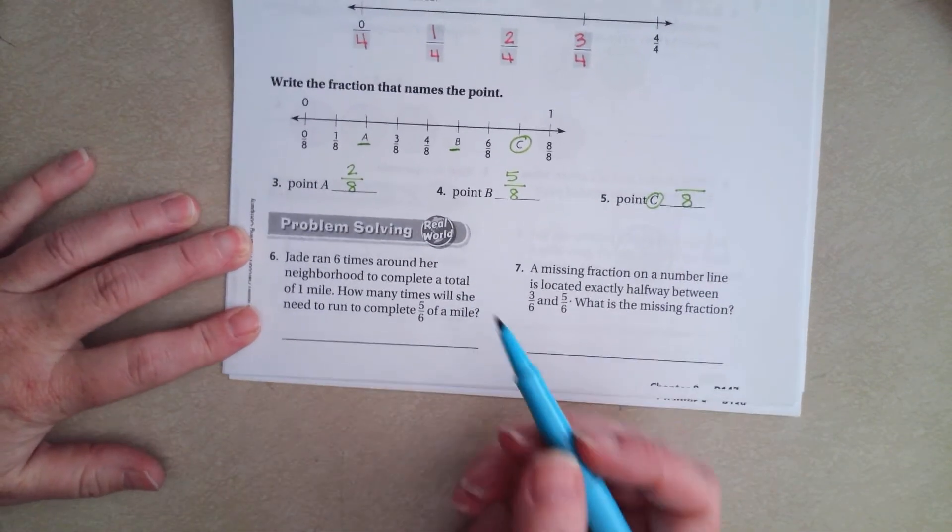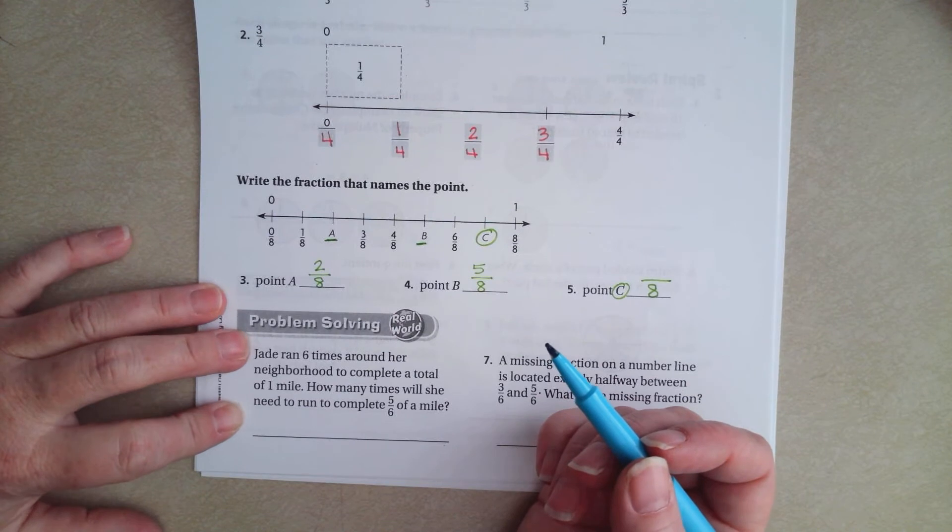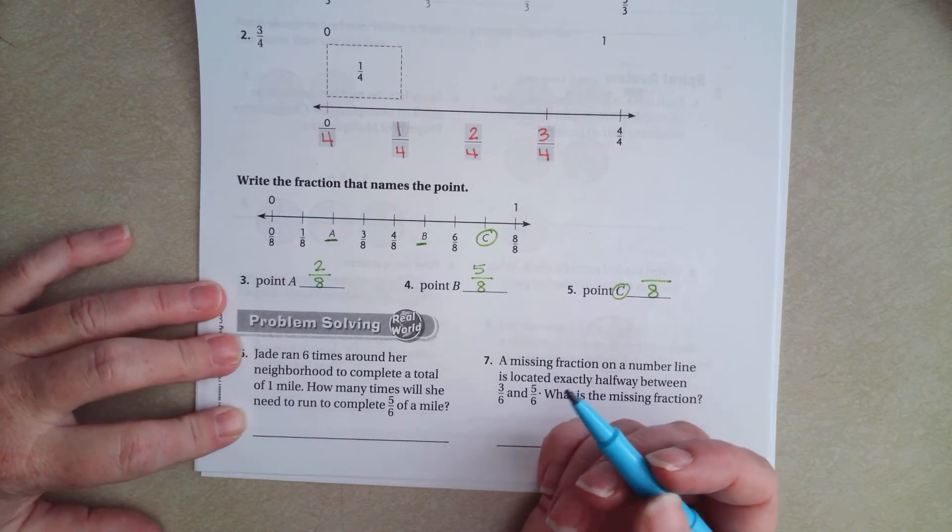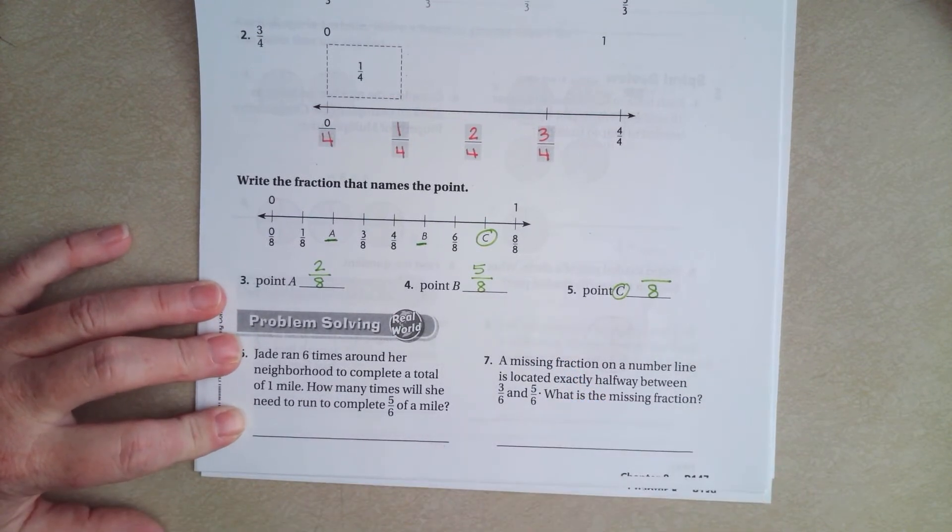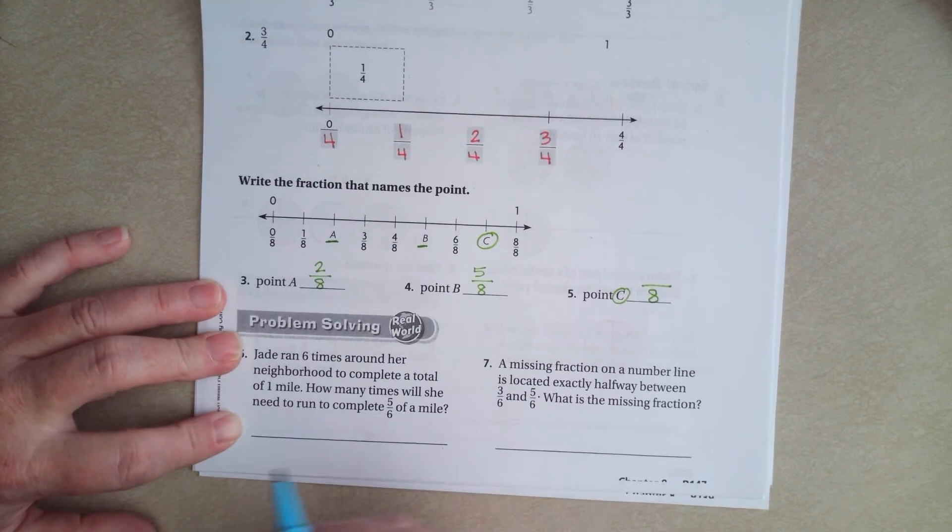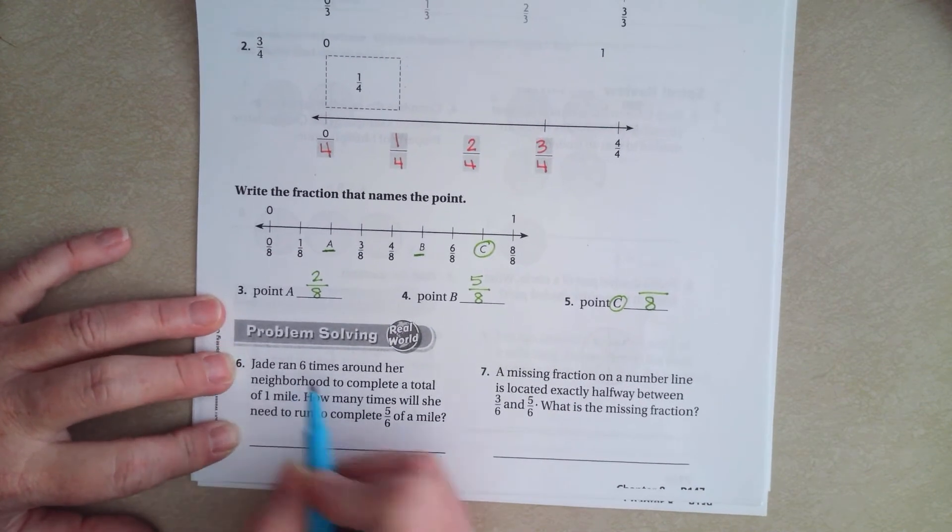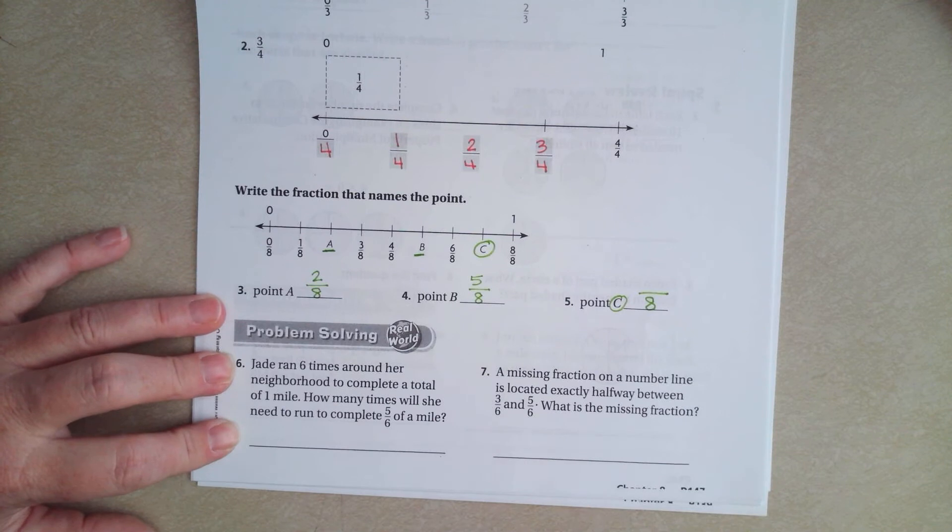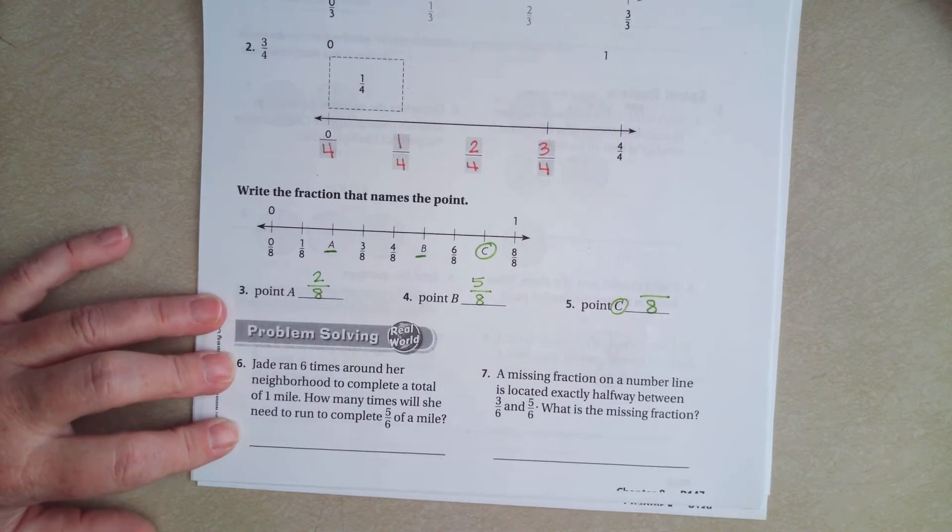We're going to go down and do number 6. It says, Jada ran 6 times around her neighborhood to complete a total of 1 mile. How many times will she need to run to complete 5 sixths of a mile? So, 6 times is 1 mile. So, 6 out of 6 is 1 mile.